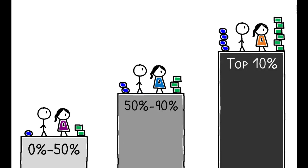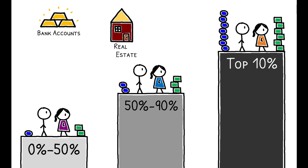What explains these differences? As total income became increasingly concentrated at the top of the distribution, why wasn't there an accompanying increase in wealth inequality? The answer proposed in this paper, and one of its key insights, is that this is driven by systematic differences in the kinds of assets held by households at different parts of the wealth distribution.